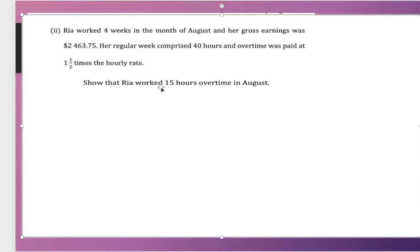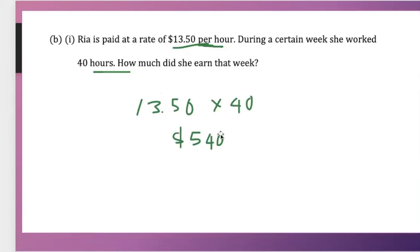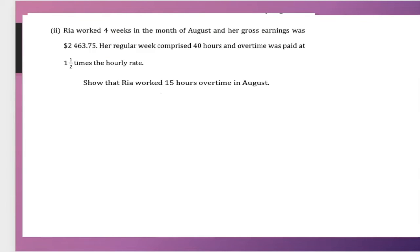First thing, it states that Ria worked for four weeks. In a normal week, Ria worked $540 for one week. So it means if she worked for four weeks, it will be four times 540.